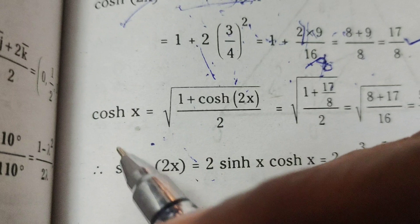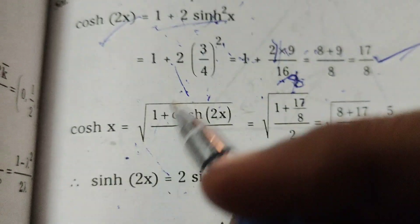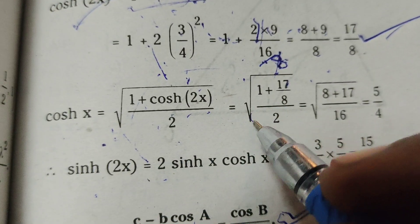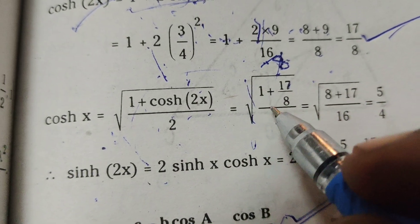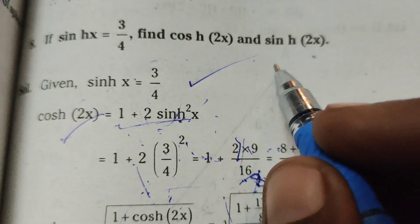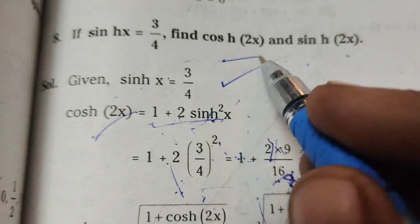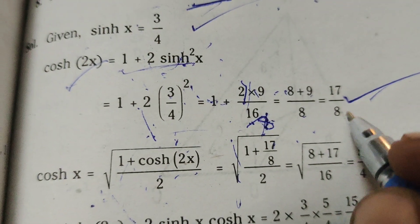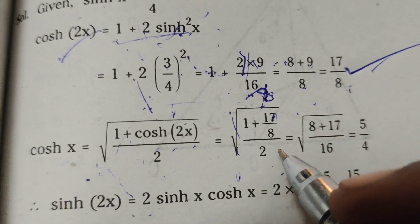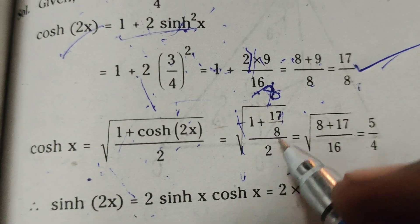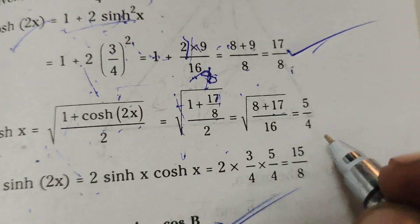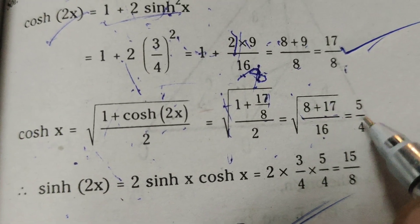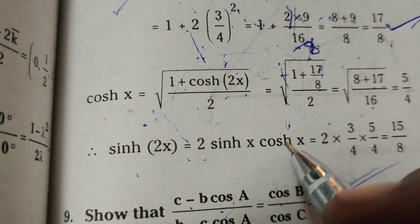First, find cosh(x). That's the square root of (1 + cosh(2x))/2, which equals the square root of (1 + 17/8)/2. That's the square root of (8 + 17)/16, which is 25/16. Removing the square root gives 5/4.